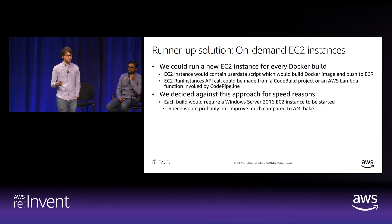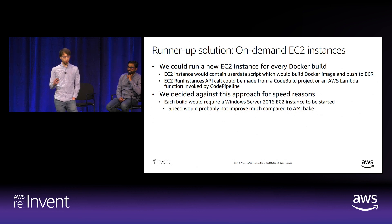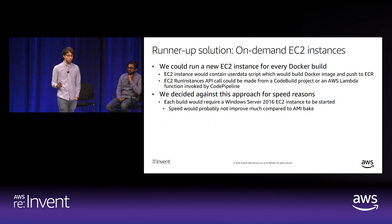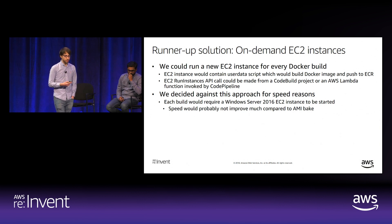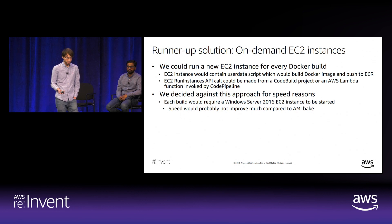We also considered running Amazon EC2 instances on-demand whenever a container build is needed, providing a user data script to the RunInstances API call containing all the steps to build the container and push to ECR. That API call could be made from a CodeBuild project or a Lambda function in the pipeline—easy to integrate. However, we decided against this for speed reasons: each build would require starting a new Windows Server 2016 EC2 instance, comparable in wait time to our AMI bakes.